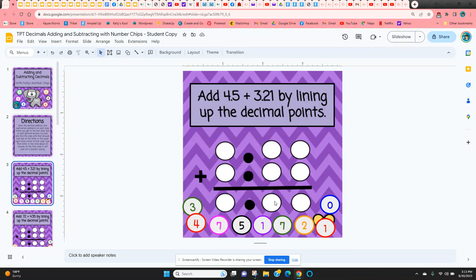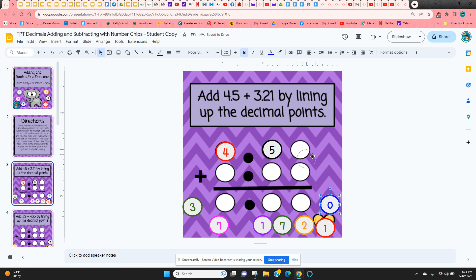They're adding four and five tenths, so they need to know the four comes before the decimal point. Click and hold on the edge, and they need to know this is a zero because there's a place value there that they need to fill.